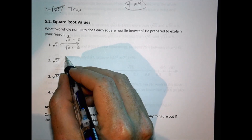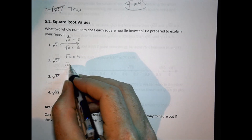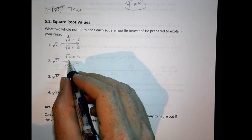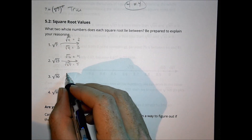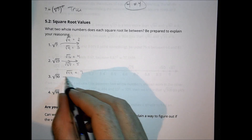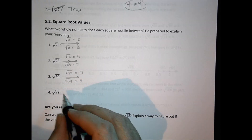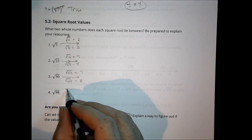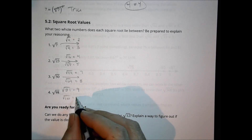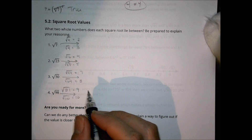For 23, we know the square root of 16 is 4 and the square root of 25 is 5, so the square root of 23 lies between 4 and 5. For 50, 7 times 7 is 49 so the square root of 49 is 7, and 8 squared is 64 — so 50 is between 7 and 8. For 98, the square root of 81 is 9 and the square root of 100 is 10, so the square root of 98 goes between 9 and 10.